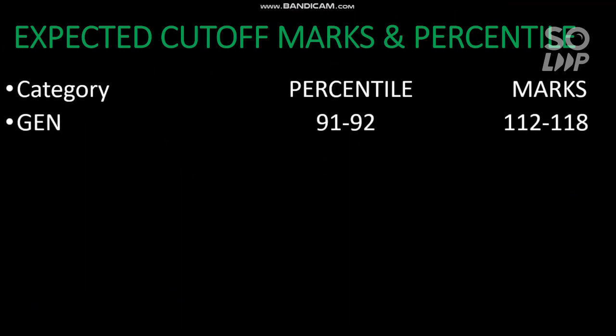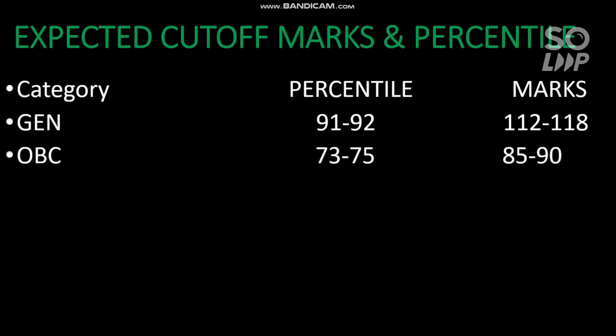For General category, you need to score at least 91 to 92 percentile. Earlier it was 90 to 91, but now it's 91 to 92 because the number of unique students will increase due to the cancellation of board examinations. For that percentile, you need to score 112 to 118 marks. The percentile will remain the same but marks might vary — it might be 110 if the paper is difficult, or 115 if it is easy. That will be the cutoff marks to be eligible for JEE Advanced.